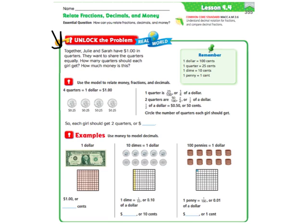It says, together, Julie and Sarah have a dollar and quarters. They want to share the quarters equally. How many quarters should each girl get? How much money is this? Okay, so they've given us a model here to relate money, fractions, and decimals.